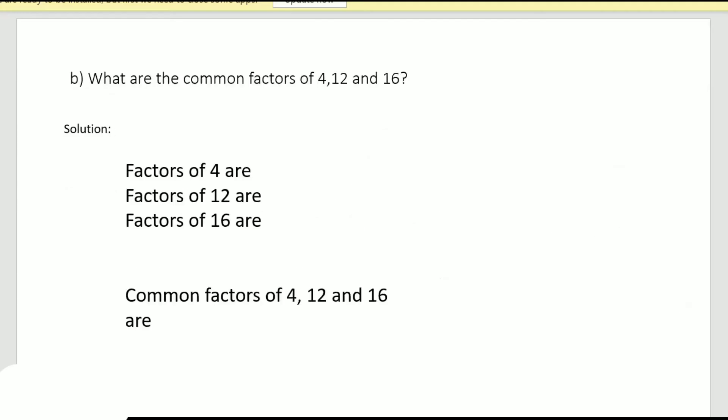Let's take the next example. What are the common factors of 4, 12, and 16? So here they have given us three numbers, but the steps would be the same. So factors of 4 are 1, 2, and 4. For 12 it would be one times 12, two times six, three times four. So I can just write it in increasing order again: 1, 2, 3, 4, 6, and 12.